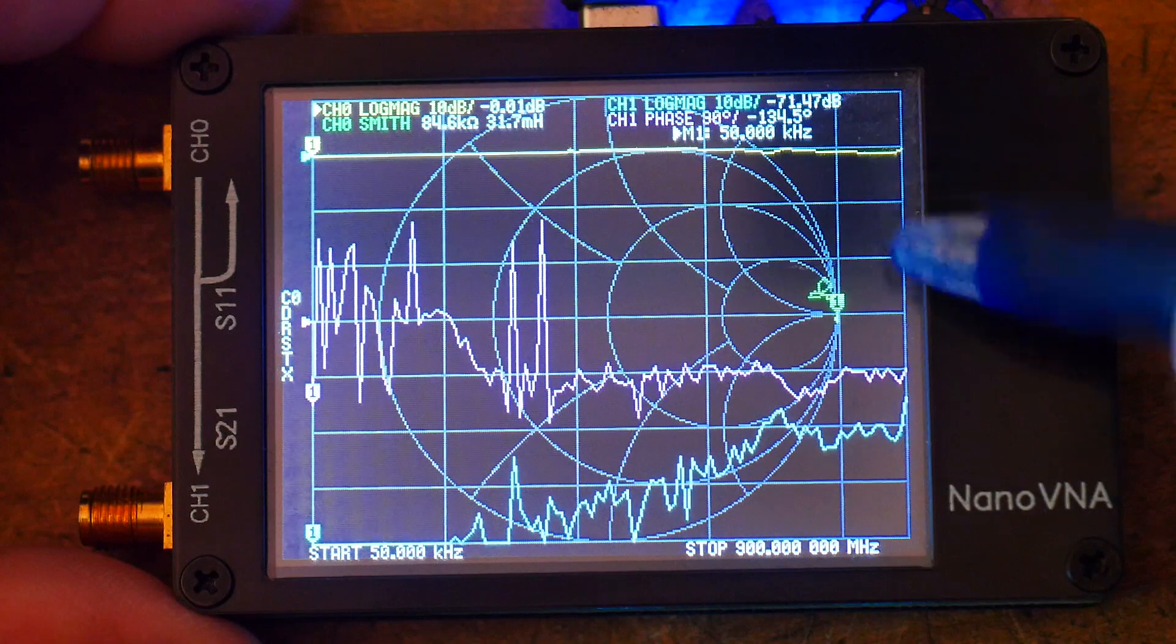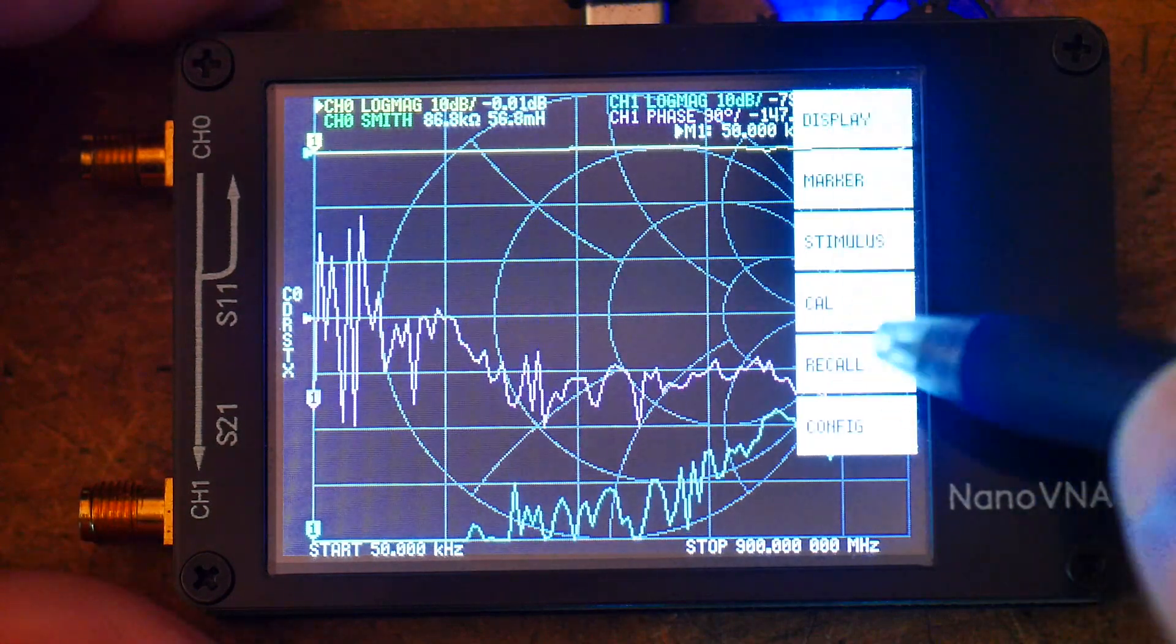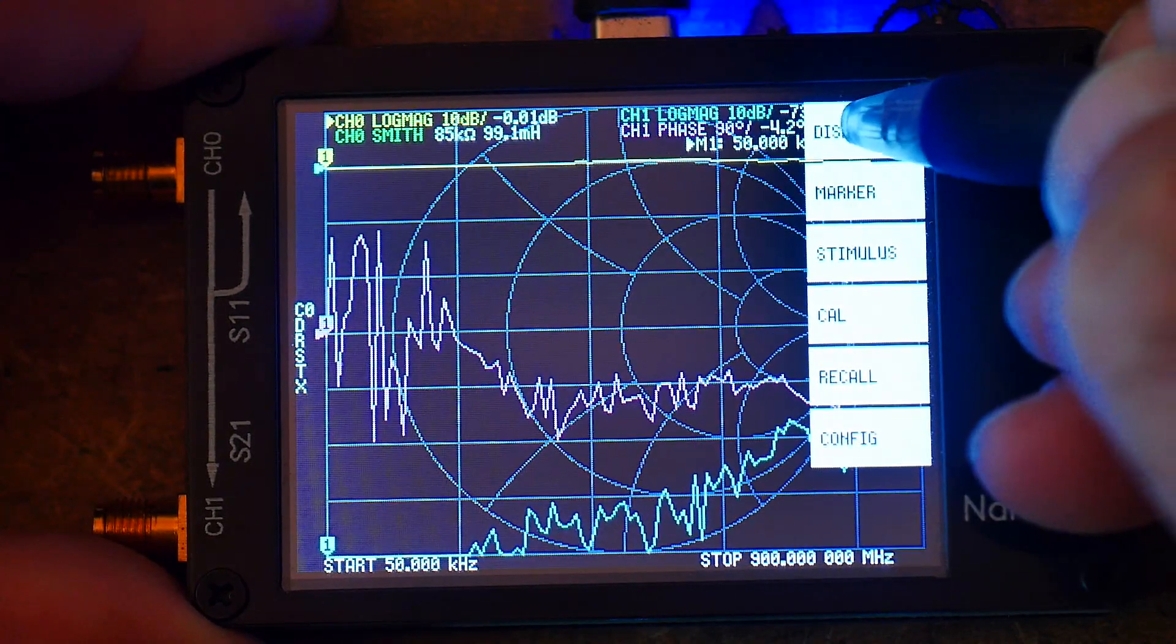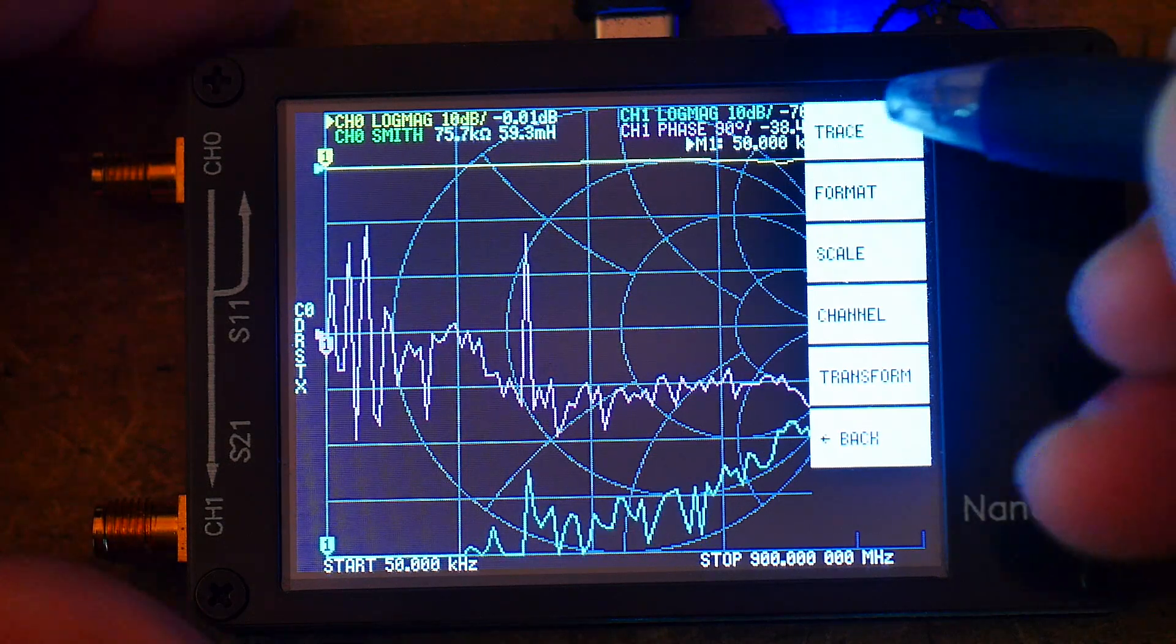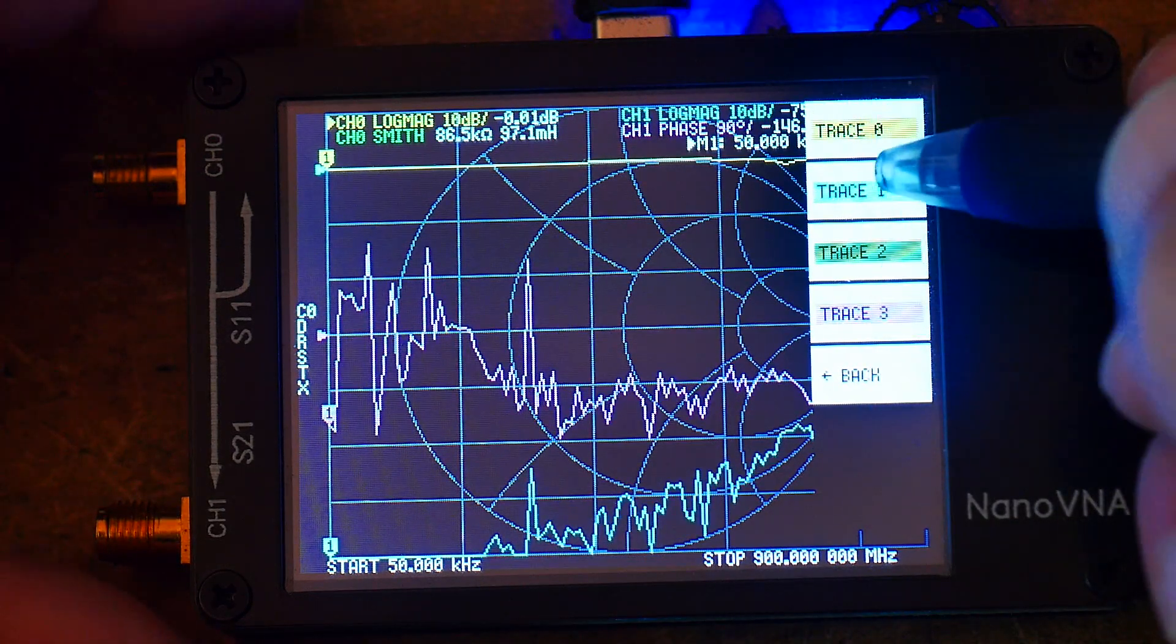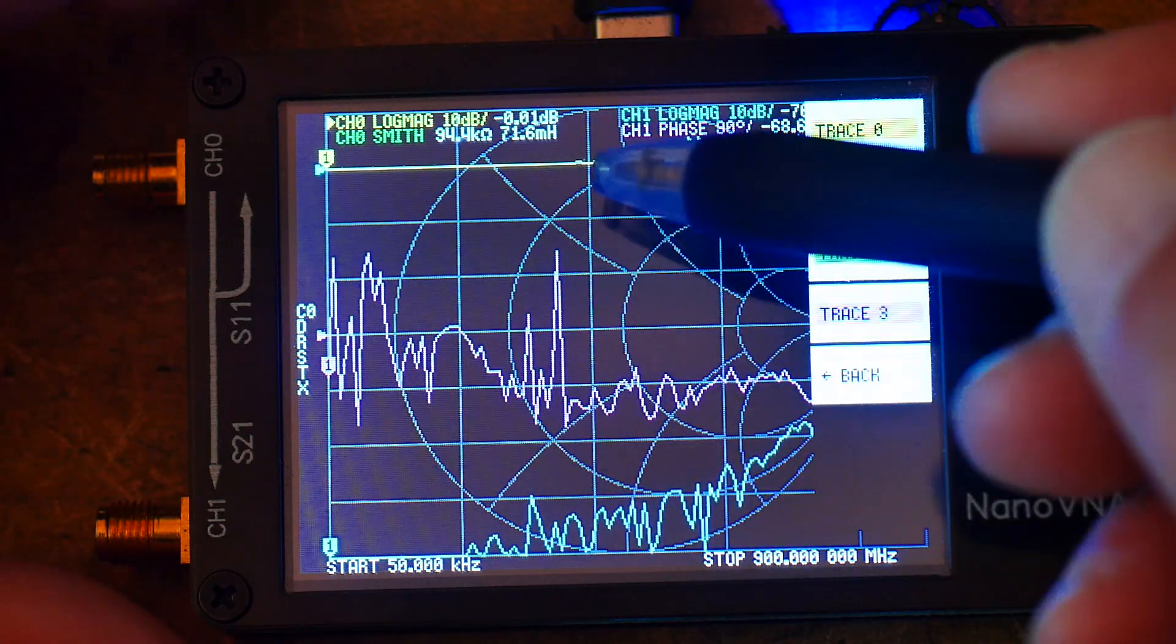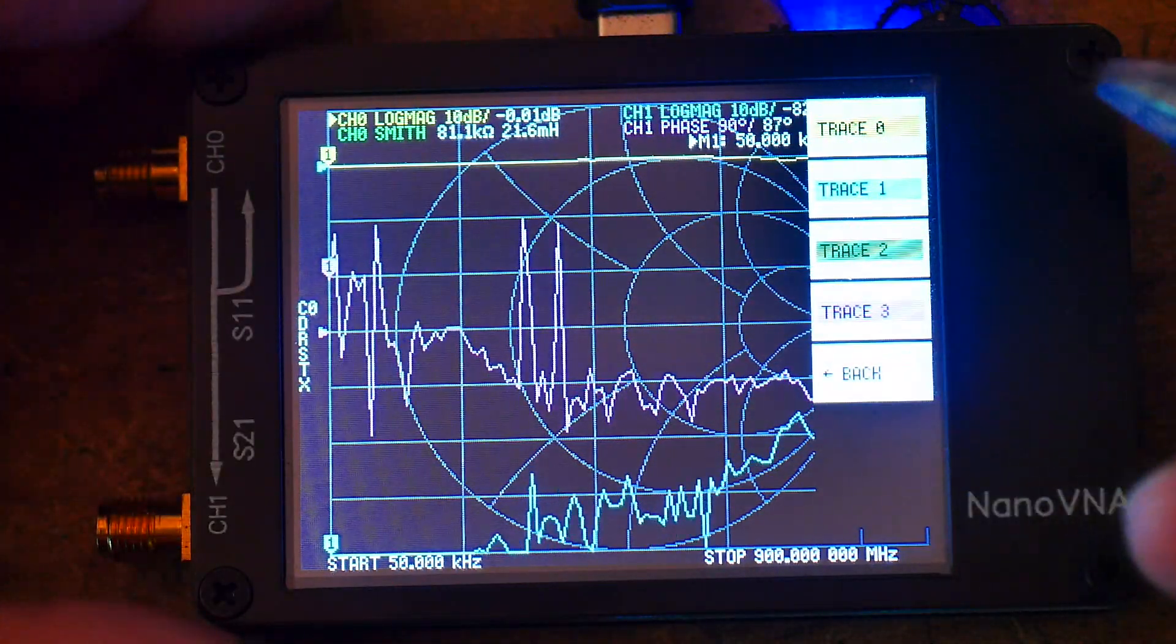So this thing is touch sensitive. So we're going to touch the display. And where we want to touch it is in the upper right hand section here. Touch it over here on the right hand side and you'll get a little display of things. This is the menu system says display marker stimulus Cal. So a bunch of stuff. We want to hit display. Click on that. And now you get a different selection. And there's something called trace. Click on trace. And now there are trace 0, 1, 2, and 3.